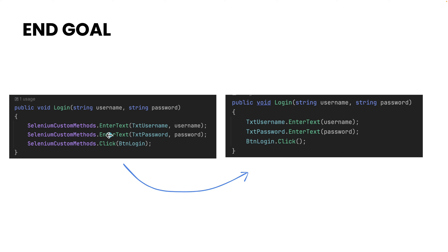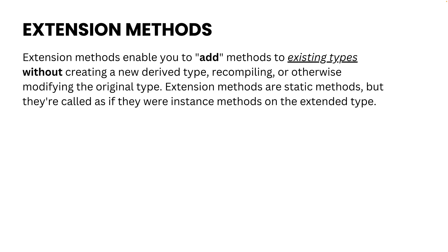How is this possible — how can we use EnterText without calling SeleniumCustomMethods every time? That is possible because C# has what is called extension methods. Extension methods enable you to add methods to existing types without creating a new derived type, recompiling, or otherwise modifying the original type.